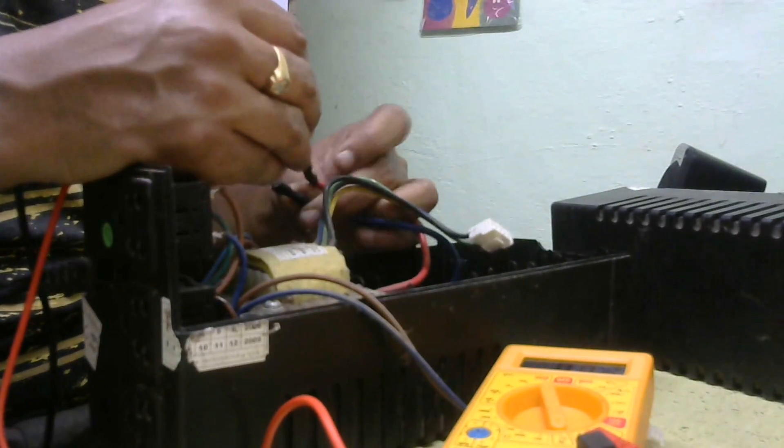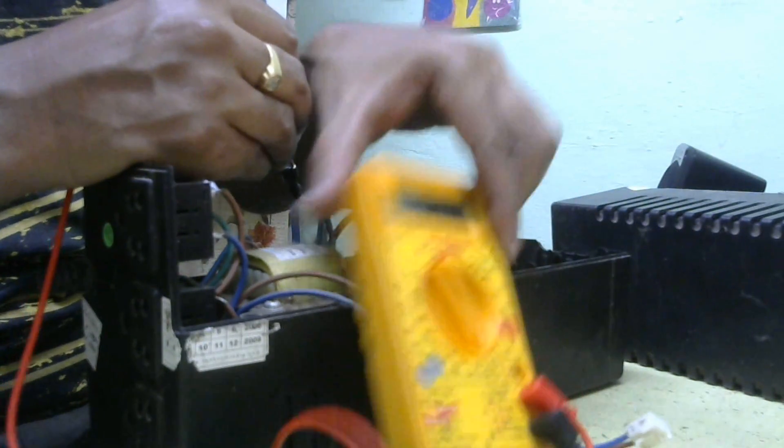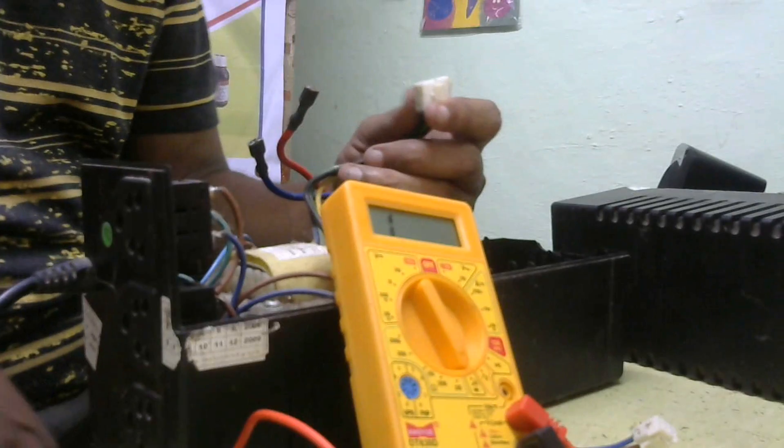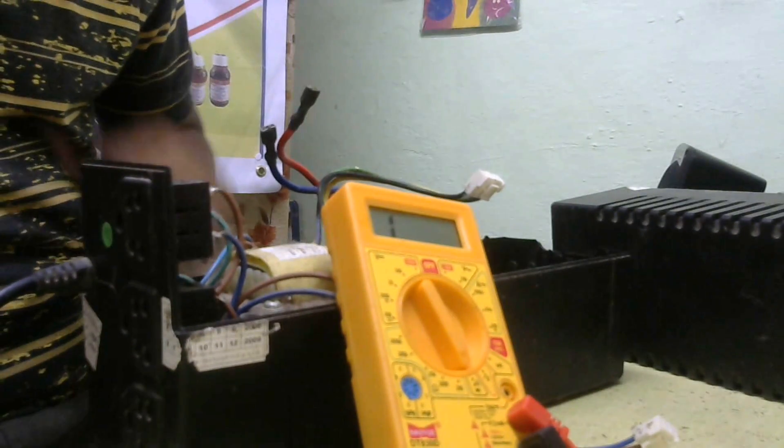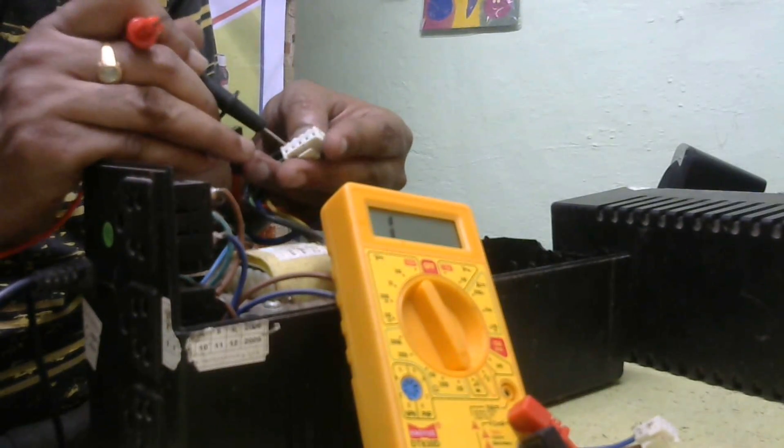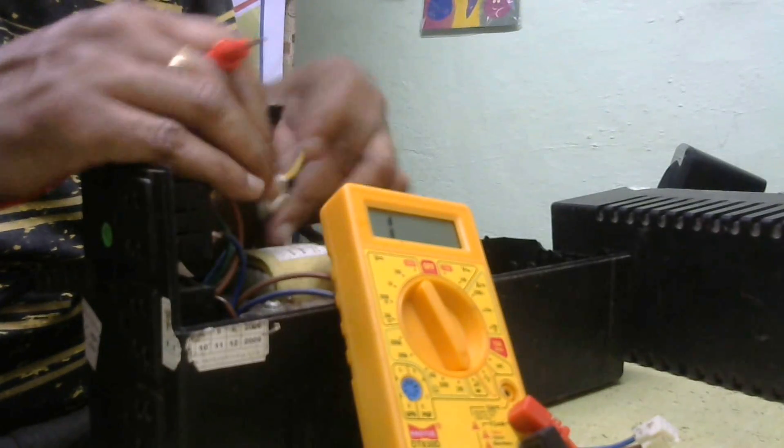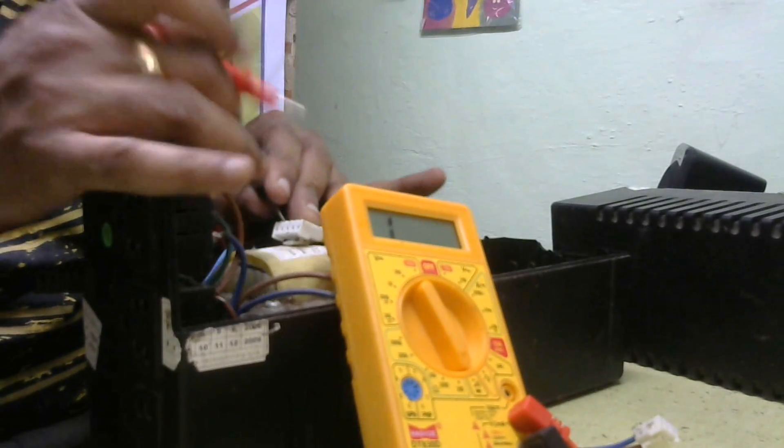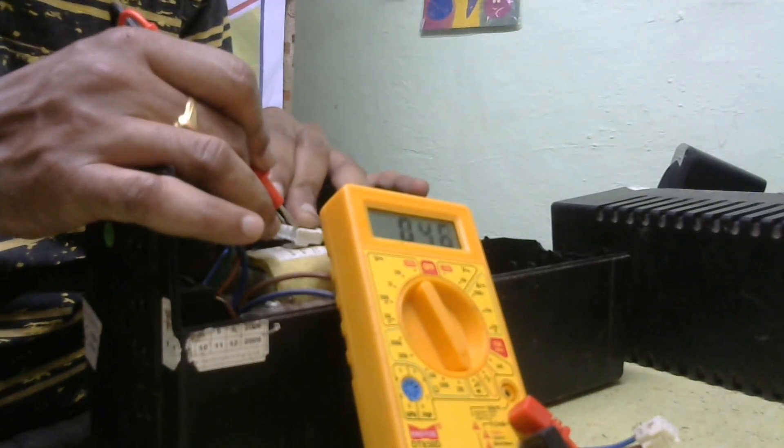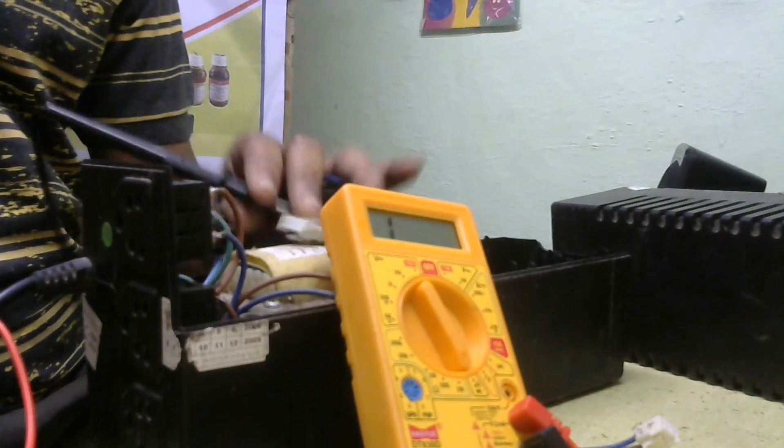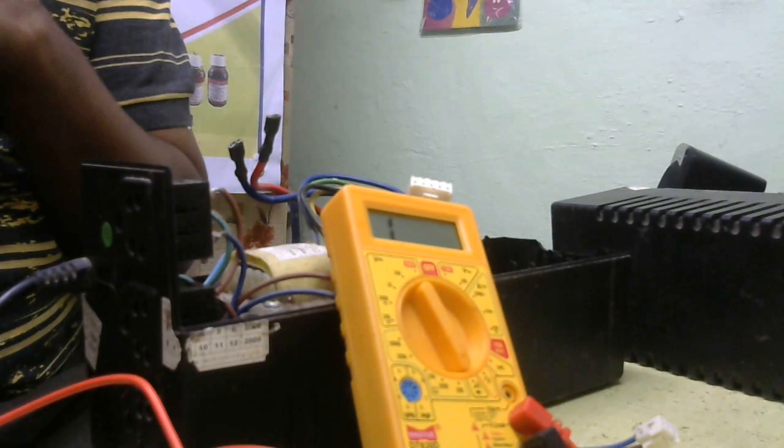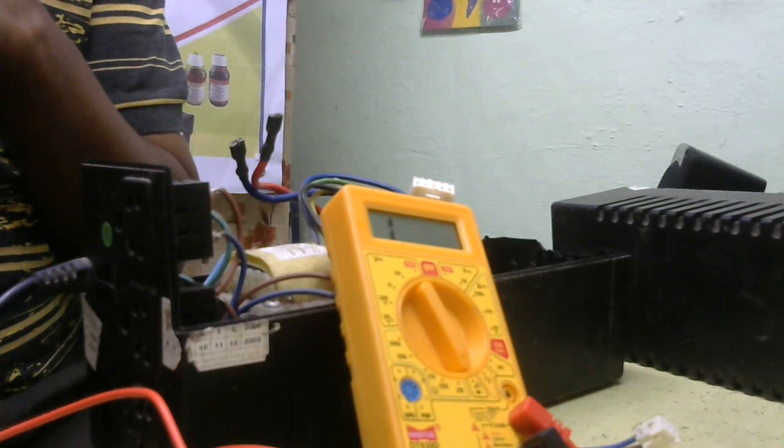Now I will check the transformer output voltages. It is working - the buzzer is coming. The transformer is also okay. This circuit is perfectly all right. This battery is dead. I checked it for two days charging - after 24 hours the battery did not charge. Replace with a new battery and this UPS will work perfectly.